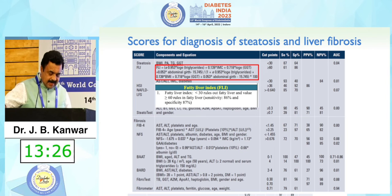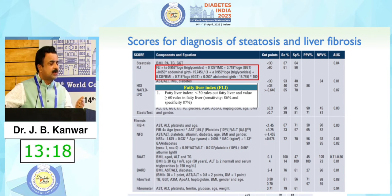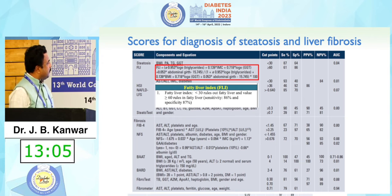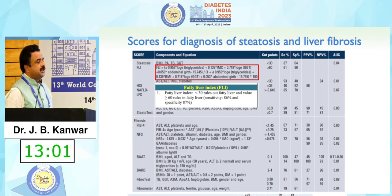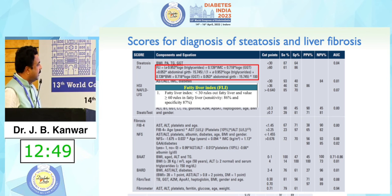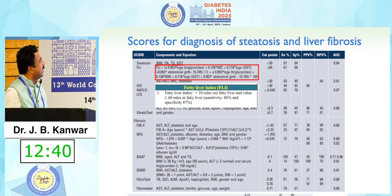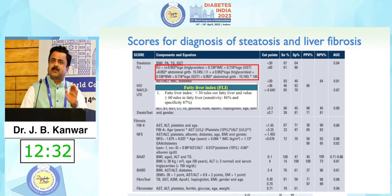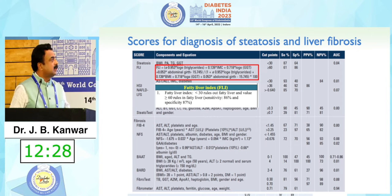Coming to scores — in primary care where ultrasound, CT scan, or MRI may not be available, how can we diagnose steatohepatitis or fibrosis? There are multiple scoring systems. For steatosis: FLI (Fatty Liver Index), HSI, NAFLD-LFS, and steatotest. FLI uses BMI, abdominal girth, triglycerides, and GGT. If FLI is less than 30, it rules out steatosis; if more than 60, you are dealing with a case of fatty liver. LFS (Liver Fat Score) uses fasting insulin, AST, and ALT, and has been validated with ultrasound and MRI.